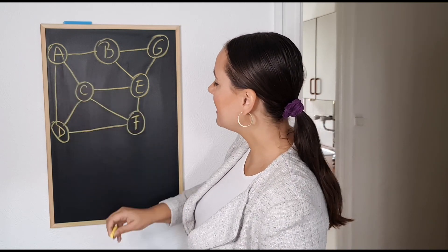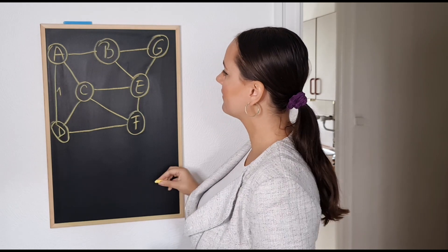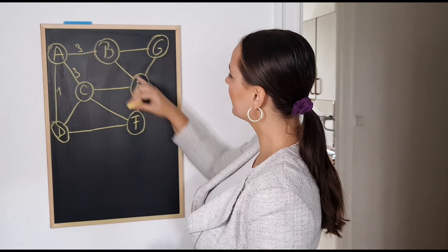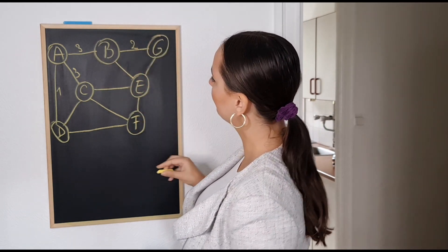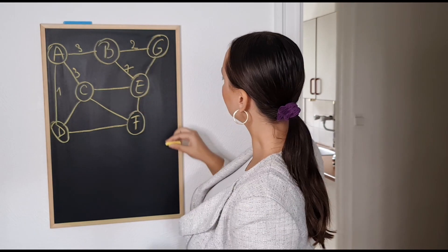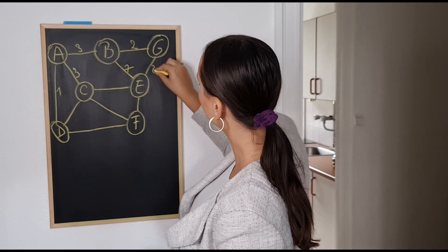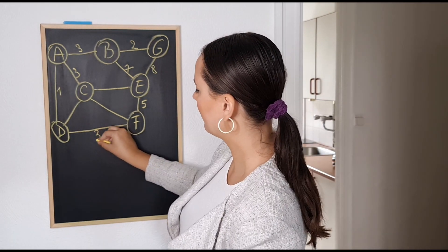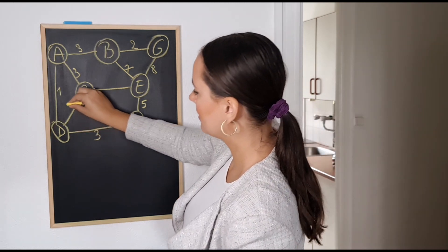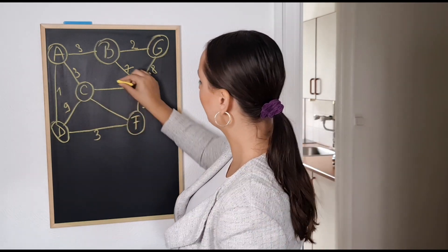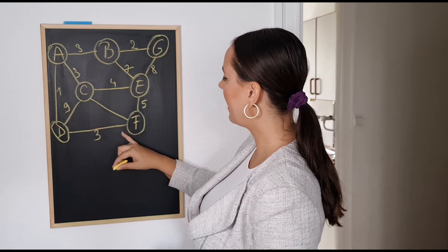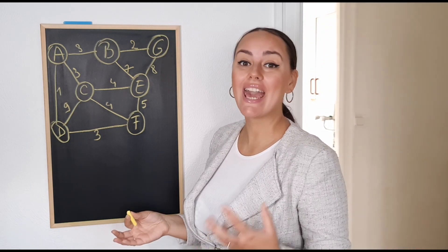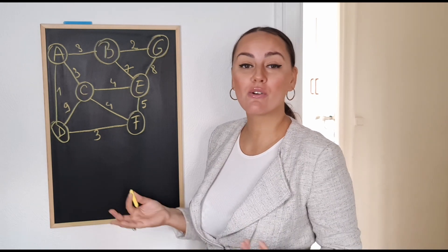Let's start with A and D — that's going to have an edge weight of 1. A and B is going to be 3, A and C is 3 again, B and G is 2, B and E is 7, G and E is 8, E and F is 5, D and F is 3, D and C is 9, C and E is going to be 4, and C and F is going to be 4. Now we have a connected, undirected, edge-weighted graph and we're actually able to perform Kruskal's algorithm.